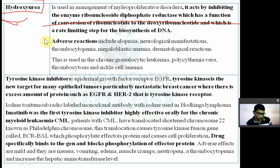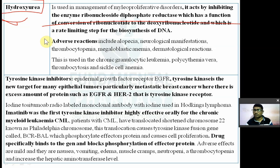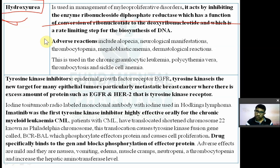DNA is a polymer of deoxyribonucleotides. Hydroxyurea inhibits the enzyme ribonucleotide diphosphate reductase, preventing the formation of deoxyribonucleotides from ribonucleotides, which is the rate-limiting step in DNA synthesis. Adverse effects include alopecia, neurological manifestations, thrombocytopenia, megaloblastic anemia, and dermatological reactions.